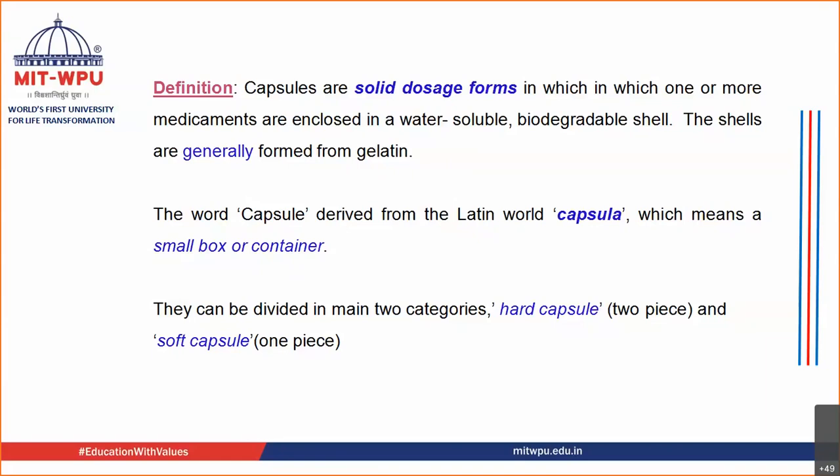Another speciality of gelatin is that it is soluble in water and at increased temperature it remains as a viscous solution. At 50°C it remains as a viscous solution, but as soon as the temperature comes down to 30–35°C, it converts into a uniform film which can then be converted into a capsule.